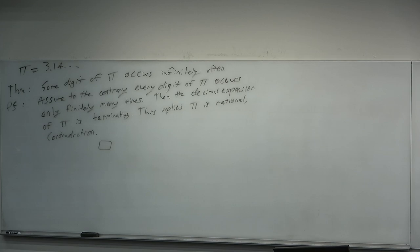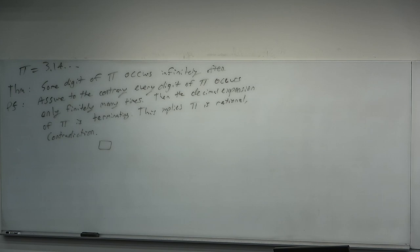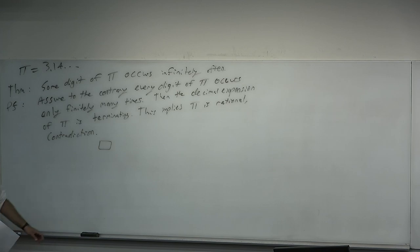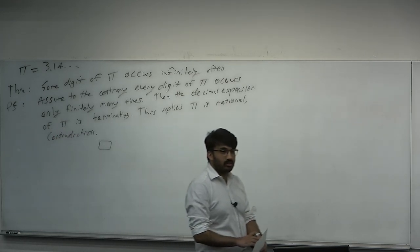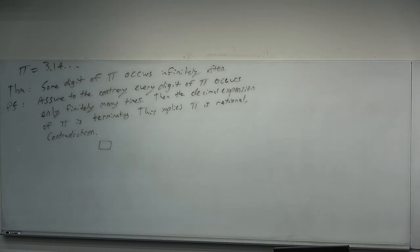Notice how we used the lemma — we didn't need to re-explain why a terminating decimal implies rationality; we just cited it. This proof is non-constructive: we don't know which digit occurs infinitely often, we don't know where it appears, but we know some digit must occur infinitely often. We asserted the existence of something without knowing what it is.